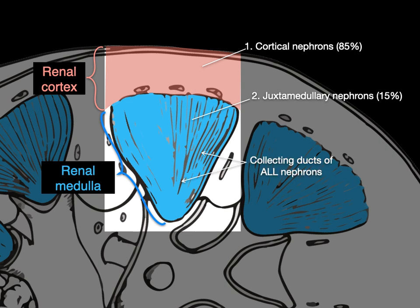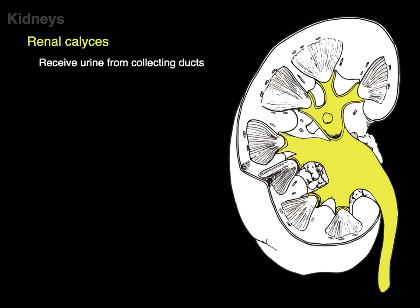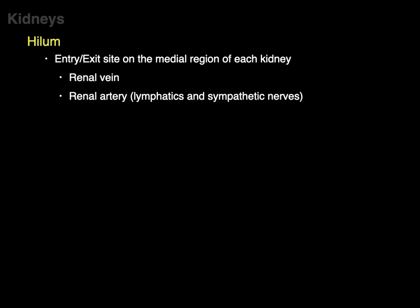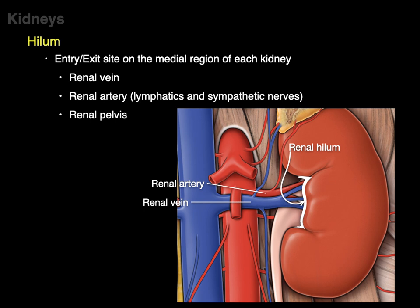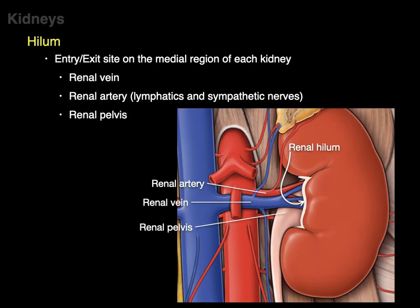All collecting ducts from all nephrons are found in the renal medulla before dumping filtrate and urine into the minor calyx. One minor calyx drains a renal pyramid; multiple minor calyces come together to form a major calyx, and major calyces form the renal pelvis, which funnels down as the ureter draining urine to the bladder. The hilum of the kidney is the entry-exit site on the medial region, consisting of the renal vein, renal artery with lymphatics and sympathetics, and the renal pelvis.